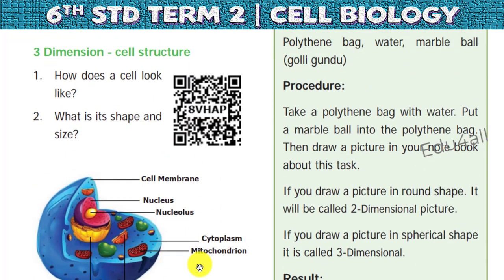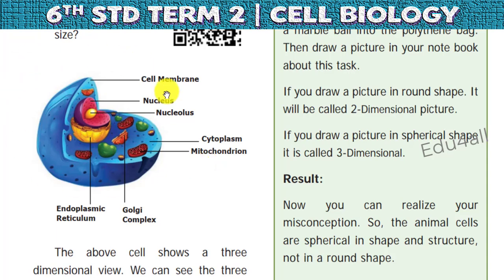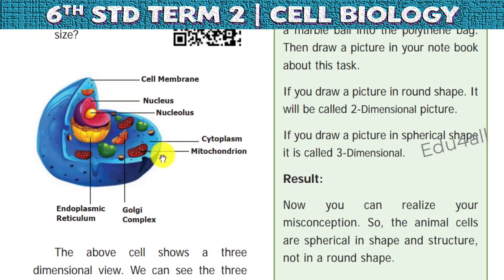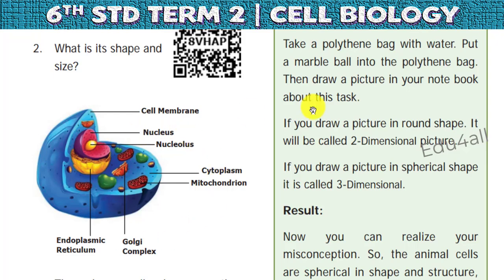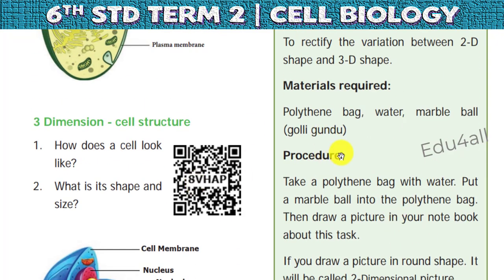This is the 3D structure of an animal cell. You can see the cell membrane, otherwise called the plasma membrane, nucleus, nucleolus, and cytoplasm. All the cell organelles are present in the cytoplasm. Mitochondria is said to be the powerhouse of the cell, which produces energy by converting it into ATP. Then there is endoplasmic reticulum. These are the key components of the 3D structure of an animal cell.